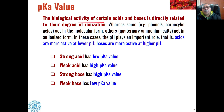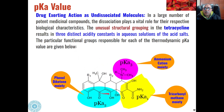Overall, the biological activity of certain acids and bases is directly related to their degree of ionization. Strong acids have low pKa values; weak acids have high pKa values; strong bases have high pKa values; weak bases have low pKa values. In the case of tetracycline compounds, there are three distinct activity constants in aqueous acid salt solution: the ammonium cation moiety, the tricarbonylmethane moiety, and the phenol diketone moiety.